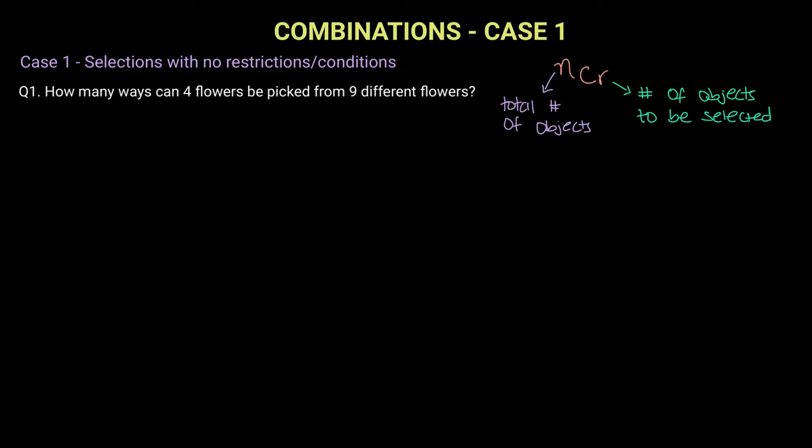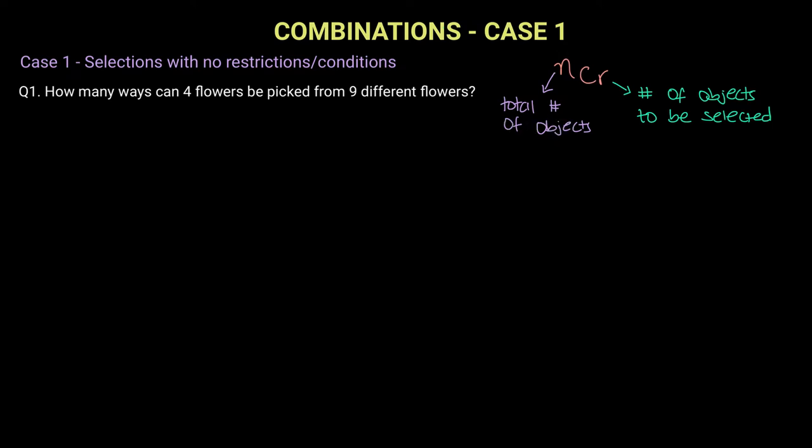if you remember from the previous video, nCr is our combination notation where n is the total number of objects in your pool and r is the number of objects to be selected.